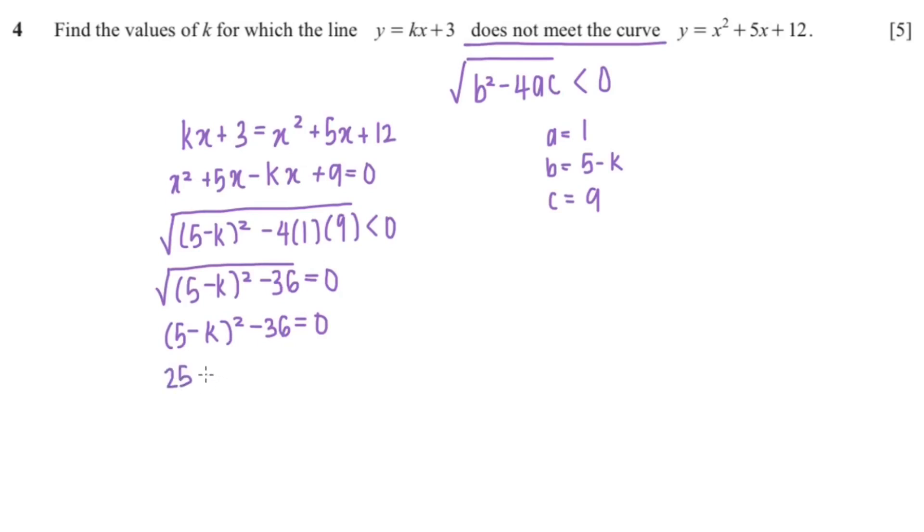I'm going to expand the bracket, so that's 25 minus 10k plus k squared minus 36 equals 0.